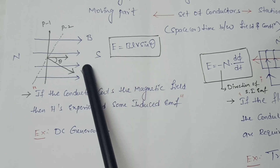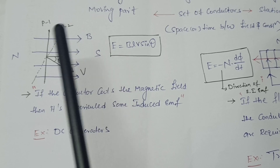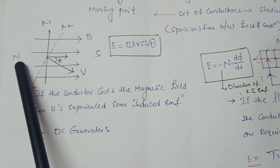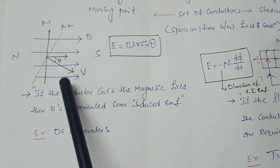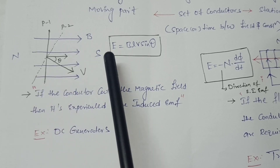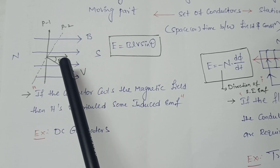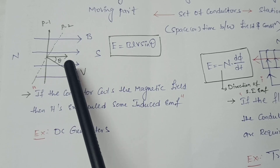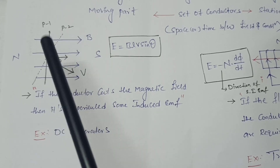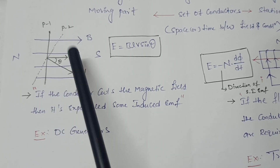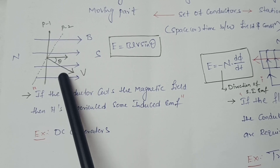In Faraday's first law, whenever flux flows from North Pole to South Pole, if a conductor is placed between the North Pole and South Pole, by using the flux cut rule, an EMF is generated. That EMF is called dynamical induced EMF.